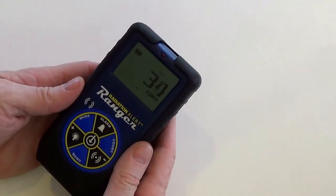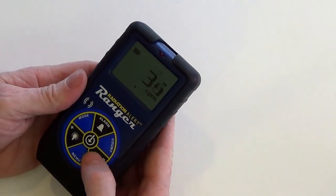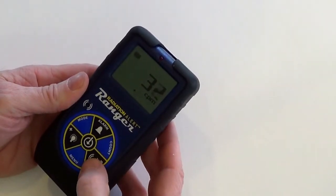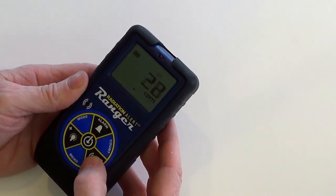You can operate the Ranger silently by pressing the audio button. Notice the audio icon at the top of the screen. Press the audio button to mute it, and the icon disappears. Press it again, the audio is back on, and the icon reappears.